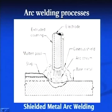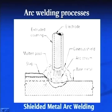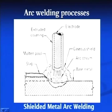In this welding process, the electrode is normally coated. The coating on the electrode performs a number of functions: it increases arc stability and develops shielding gases which protect the molten metal from atmospheric contamination. After reacting with impurities, these coating fluxes form slag which becomes lighter and floats on the surface of the molten metal. That slag can be seen on the upper surface of the deposited weld bead.